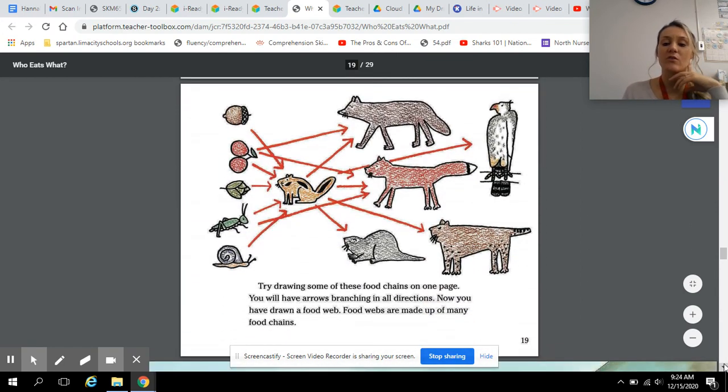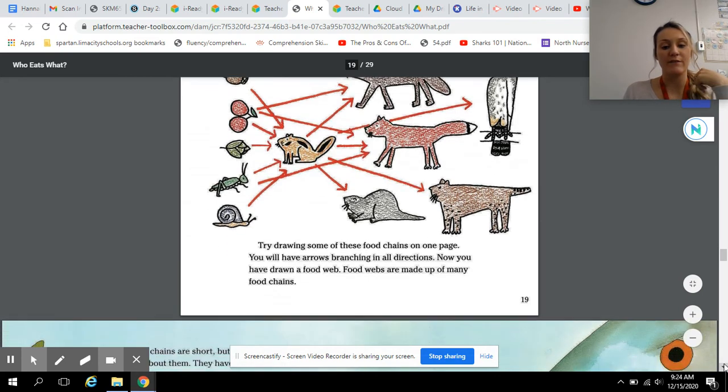Try drawing some of the food chains on one page. You will have arrows branching in all directions. Now you have drawn a food web. Food webs are made up of many food chains.